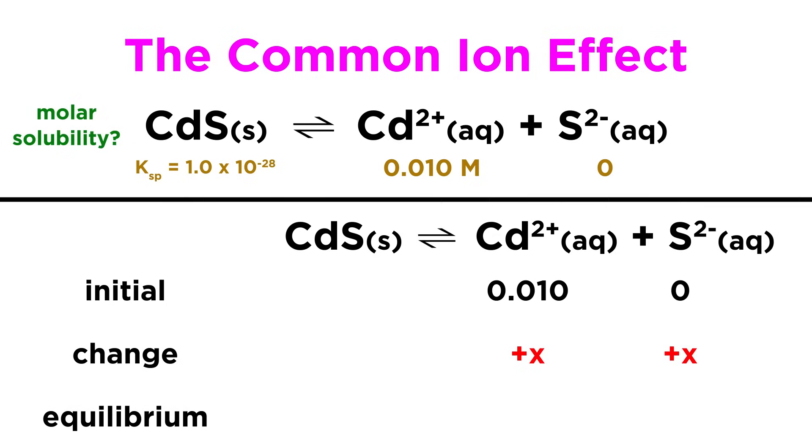Then a tiny amount of the cadmium sulfide will also dissolve, so we must add a change of X to each initial concentration to get our equilibrium concentrations, which will be 0.01 plus X, and X.